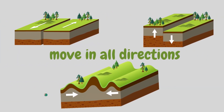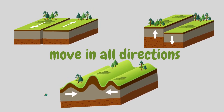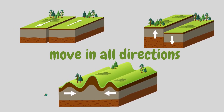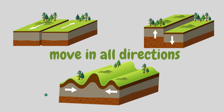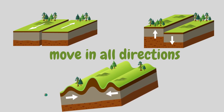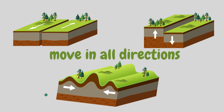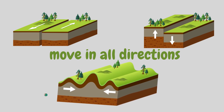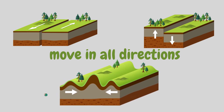As the asthenosphere starts moving in different directions, it sends a seismic wave to the crust of the Earth, and the tectonic plates start moving past each other and cause earthquakes.